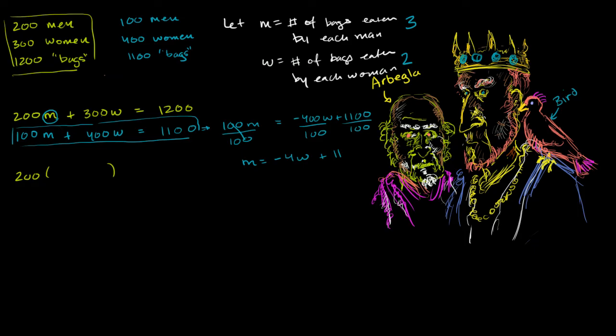the bird says, well, m, by the second constraint, m is equal to negative 4w plus 11. So instead of writing an m, we substitute the value for m, we substitute for m the expression negative 4w plus 11. And then we have the rest of it plus 300w is equal to 1,200.